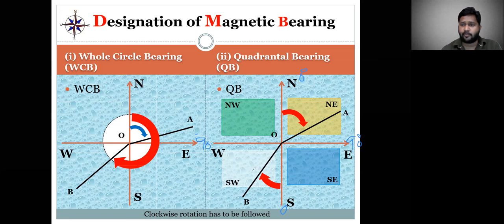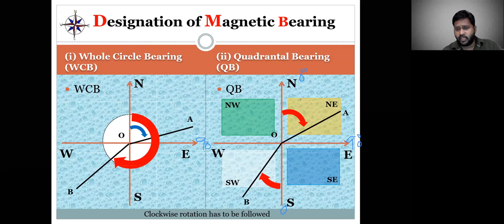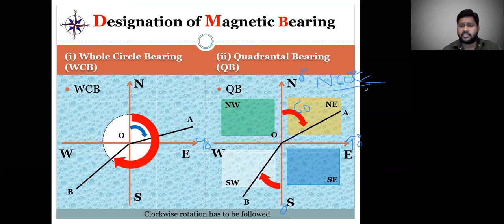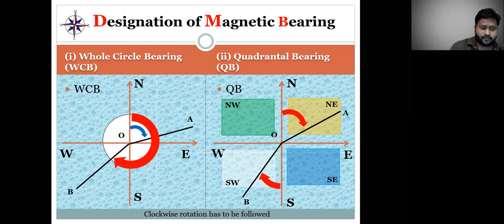Whatever bearing you represent in Quadrantal Bearing is always between 0 to 90 degrees only. For example, if the angle is 60 degrees and it falls in the northeast quadrant, it is represented as North 60 degrees East. This Reduced Bearing can be observed by using a surveyor compass only.